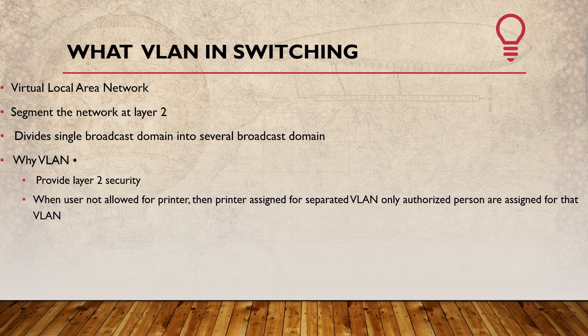In a data center, we have different zones - inside zone servers, outside zone servers, and internet-facing servers. Each zone communicates only within itself, which is why we use the VLAN concept to isolate zones. This provides Layer 2 security. For instance, if one user tries to access a printer on a separate VLAN, Layer 2 access is restricted. The printer is on a separate VLAN, and any inter-VLAN access requires passing through a firewall or L3 device.